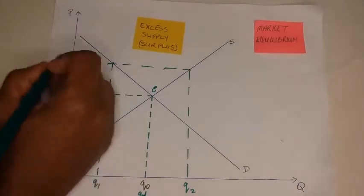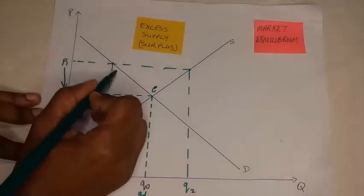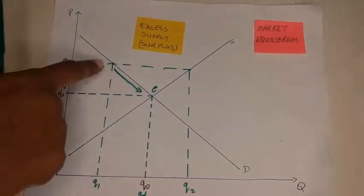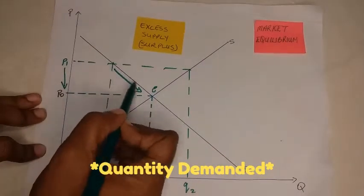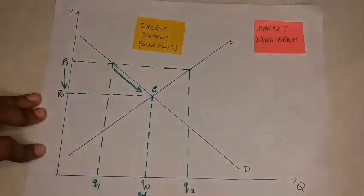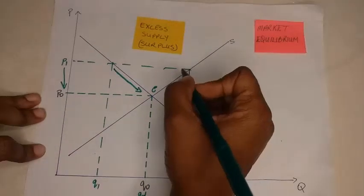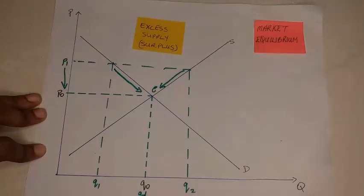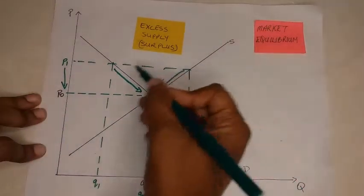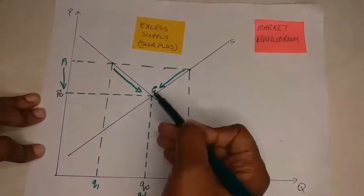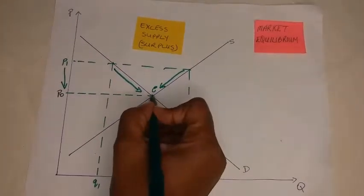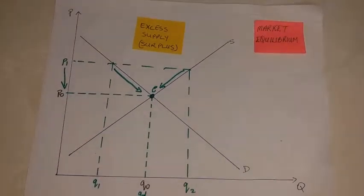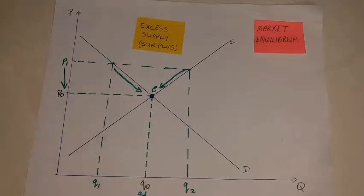So notice, as we have this price at p1 where we have the excess supply or surplus, price begins to fall. When price falls, demand increases — we have an extension along the demand curve. And when price falls, we have a contraction along the supply curve. This movement along the demand and supply curves tends towards the equilibrium point, where again quantity demanded equals quantity supplied.